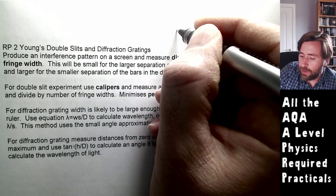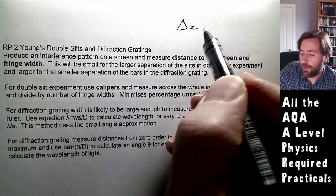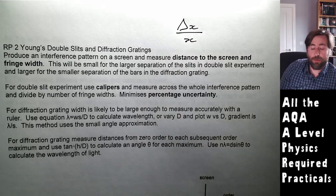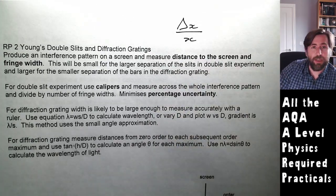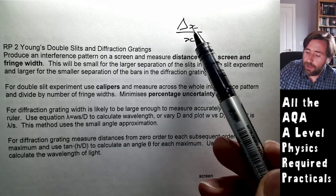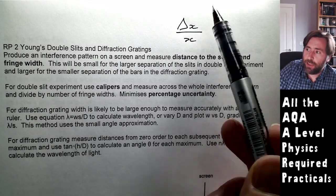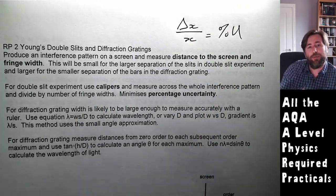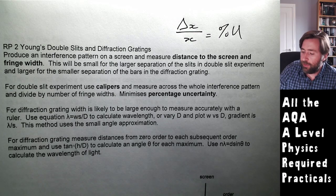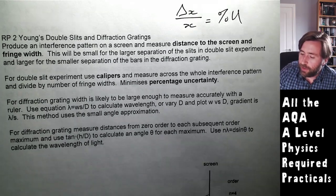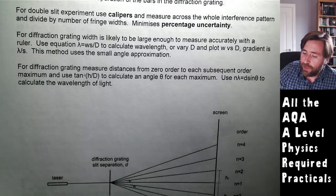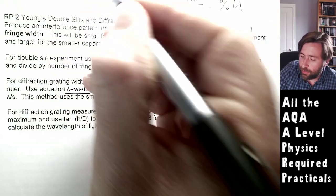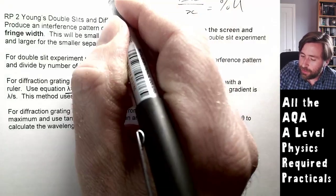You use vernier calipers giving 0.01 mm resolution to reduce percentage uncertainty as much as possible. The key idea is: percentage uncertainty equals delta-x divided by x, so you want the measurement x as large as possible and the uncertainty delta-x as small as possible. Because the angle is very small, you can use the small angle approximation: lambda equals w times s divided by D, where s is the slit separation and D is the distance to the screen.